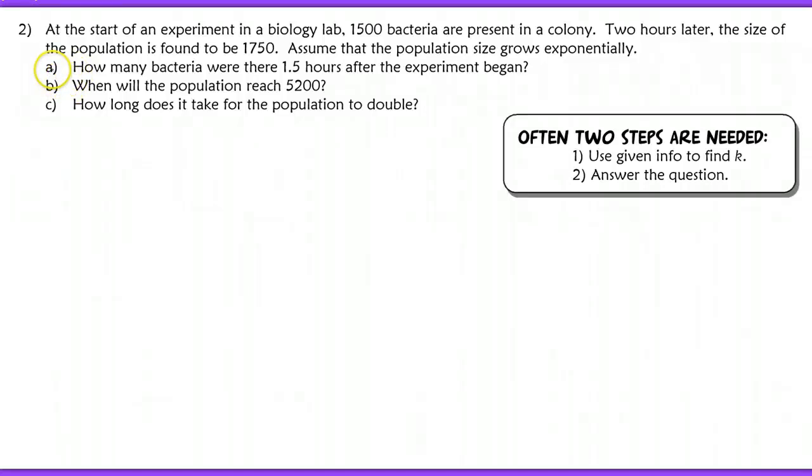We're going to still assume exponential growth here that is continual. The first question was, how many bacteria were there after one and a half hours? We have the time, but we're still missing K. So we always usually have two steps when we're doing these application problems, and that's to use the given information to find K, and then you go back to answer the actual question. So let's start with our growth model. N equals N sub zero times E to the KT.